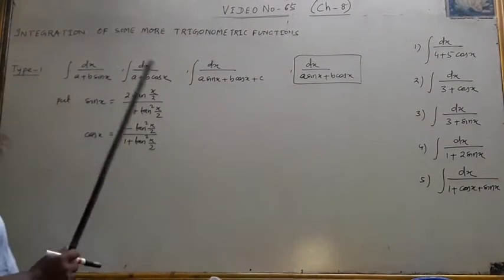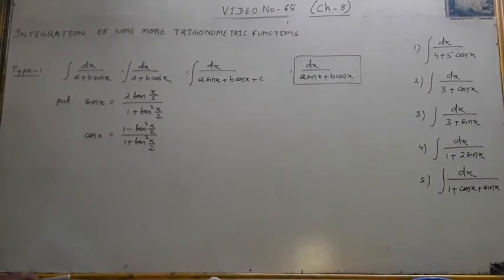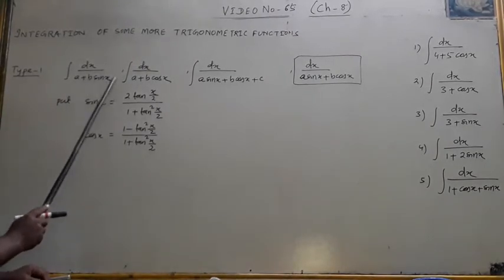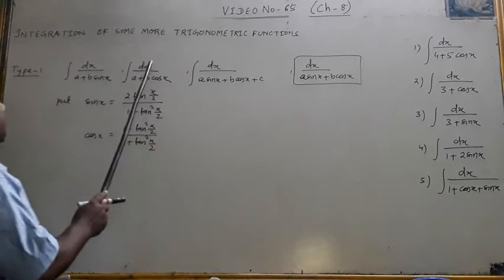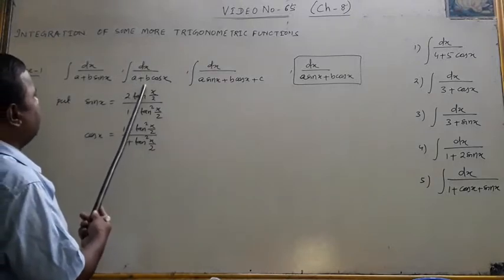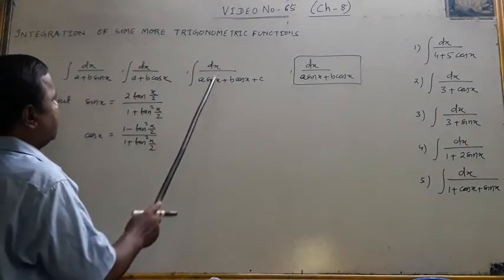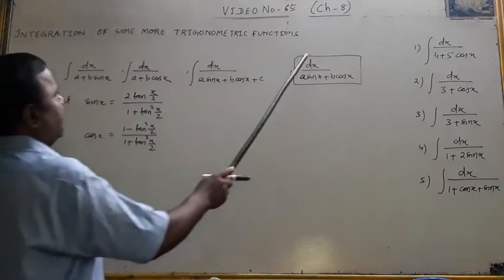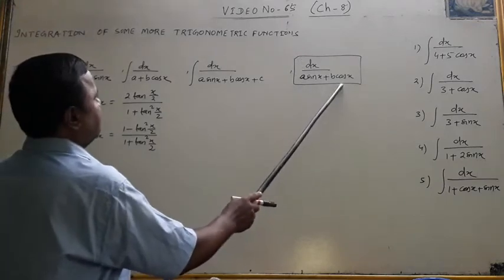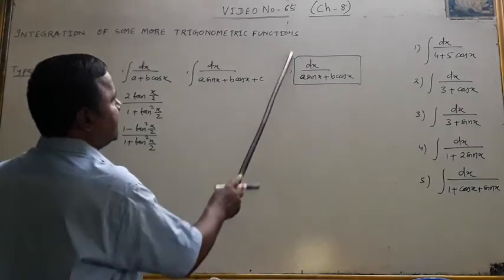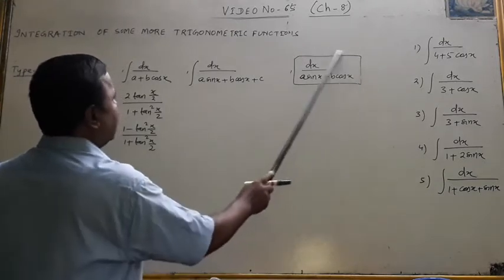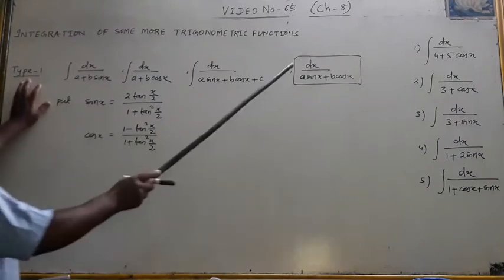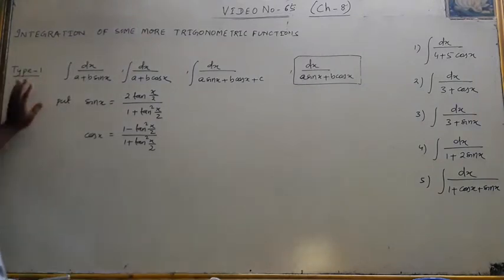There are 4 to 5 types of problems. Type 1 involves: dx by (a plus b sin x), or dx by (a plus b cos x), or dx by (a sin x plus b cos x plus constant). The last form — dx by (a sin x plus b cos x) — is marked as a special box form that will be covered in Type 2.